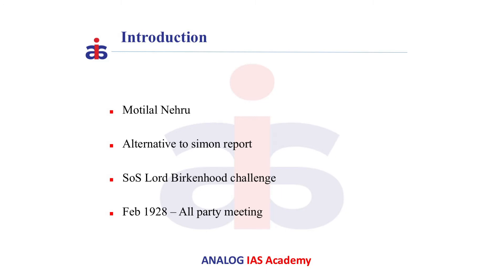Now let us see some background. At this time, the Secretary of State was Lord Birkenhead. The Labour Party questioned him regarding the Simon Report, and he challenged them by saying that if Indians could come up with an agreed constitution, he would throw away the Simon Report and make it the basis for the next act. So in February 1928 in Delhi, an all-party meeting was convened by the Indian National Congress, and it convinced all the parties to form an agreed constitution. A subcommittee was created with members from all the political parties.